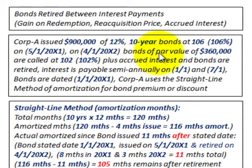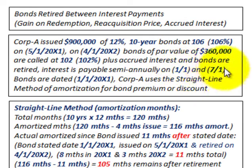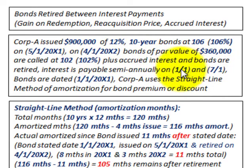The other thing to consider is both the issue date of 5-1-20X1 and the retirement date. The annual interest is paid on January 1st and July 1st each year. The bonds were issued on 5-1-20X1, which is four months after the first payment date and between the January 1st and July 1st interest payment dates. They're being called back on 4-1-20X2, 11 months later, which is again between the interest payment dates — three months after the January 1st payment date.